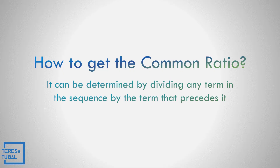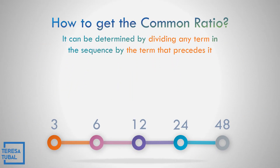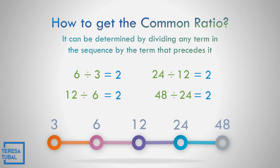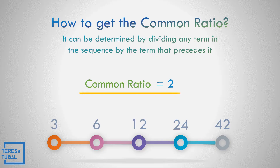How do we get the common ratio? It can be determined by dividing any term in the sequence by the term that precedes it. In the example 3, 6, 12, 24, and 48: 6 divided by 3 equals 2; 12 divided by 6 equals 2; 24 divided by 12 equals 2; and 48 divided by 24 equals 2. So the common ratio of this geometric sequence is equal to 2.